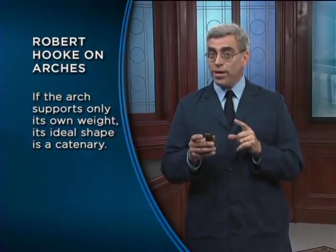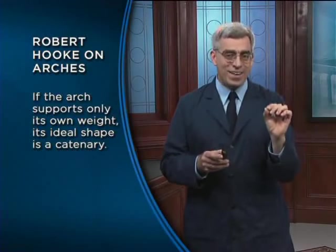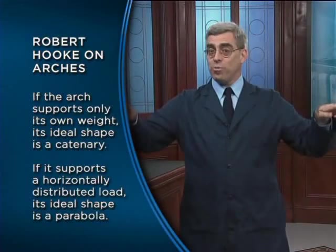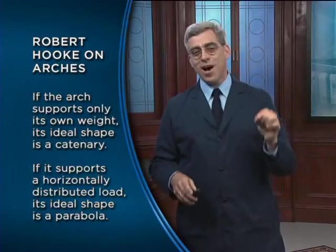If the natural shape of a cable is parabolic, why are all Roman arches semicircular? The Romans were tremendously capable engineers but didn't have the analytical methods to discover that a semicircle is not the optimal shape. It wasn't until the 1600s that Robert Hooke applied the principle of equilibrium to determine the ideal shape for an arch. His conclusion: if the arch supports only its own weight, its ideal shape is a catenary; if it supports a horizontally distributed load, its ideal shape is a parabola.